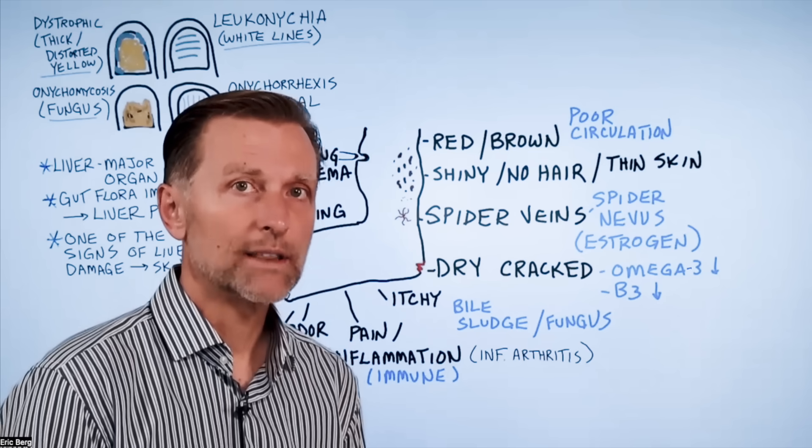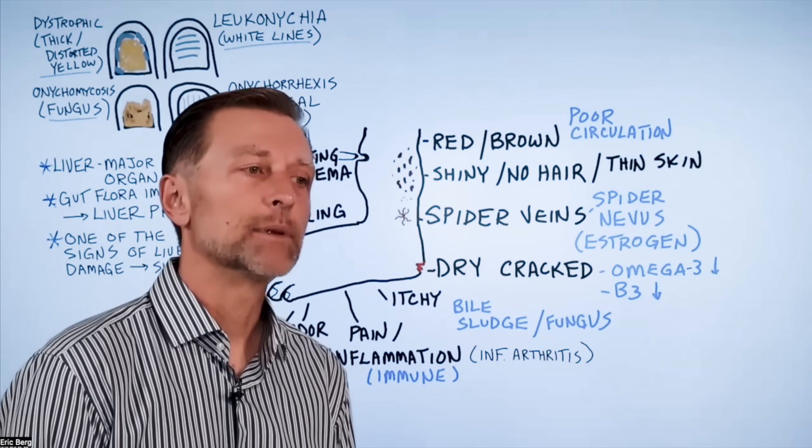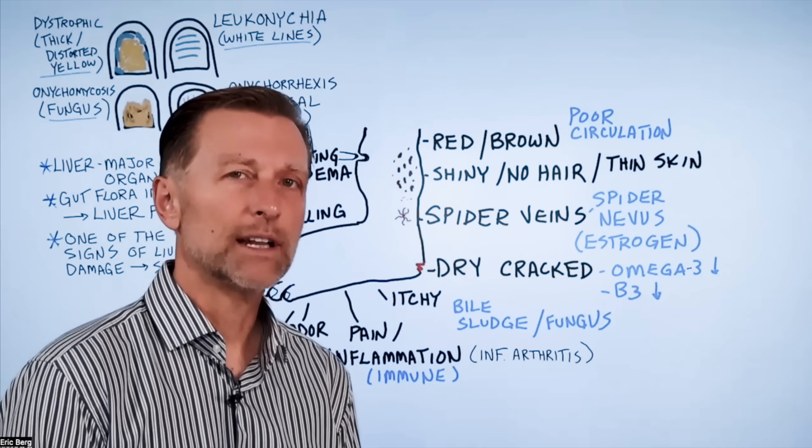The liver has a lot to do with the clotting factors, vitamin K, and when you lose the liver function, you can have a lot of things like bruising and discolored spots in different parts of your body.